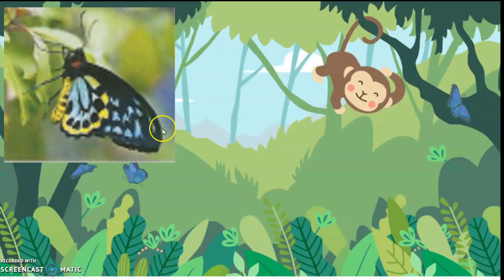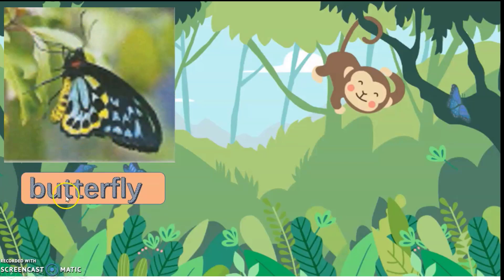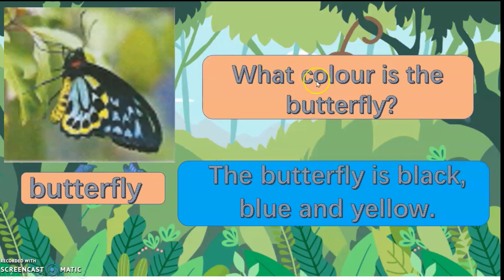What insect is this? It's a butterfly. What colour is the butterfly? The butterfly is black, blue and yellow.